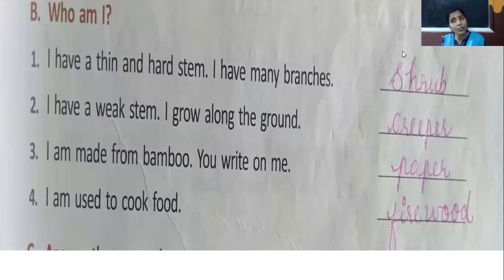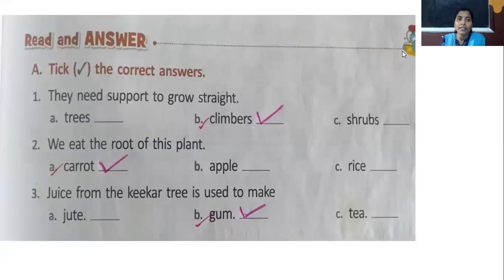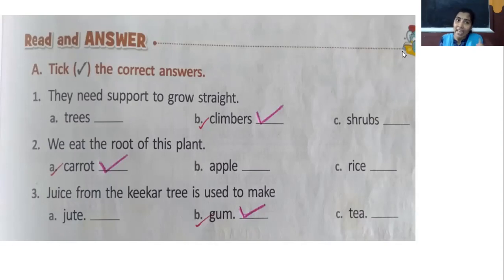I am used to cook food — that is firewood. Choose the correct answer: They need support to grow straight — climbers need support. We eat the root of this plant — carrot. Juice from the kika tree is used to make gum.